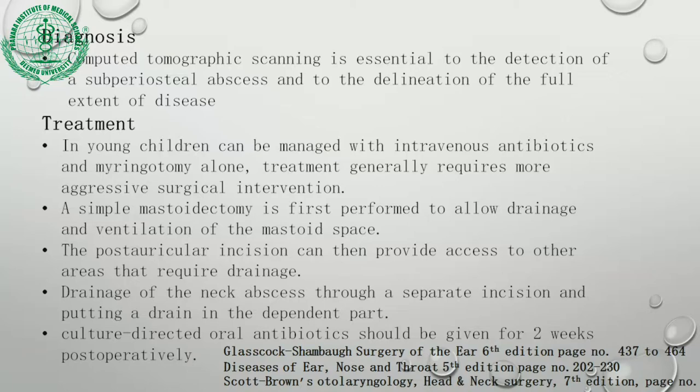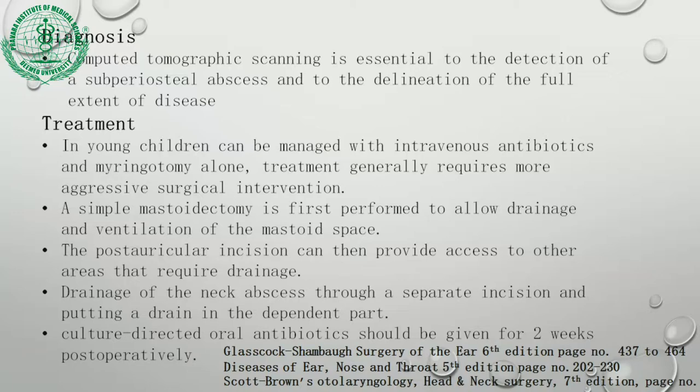Diagnosis: HRCT temporal bone for delineation of the sub-periosteal abscess and extent of disease. Treatment: IV antibiotics with myringotomy alone can manage some cases. Treatment generally requires more aggressive surgical intervention — a simple mastoidectomy to drain and ventilate the mastoid space. Post-auricular incision provides access for drainage. Neck abscesses are drained through a separate incision with a drain placed in the dependent part. Culture-directed antibiotics are given for at least two days post-operatively.